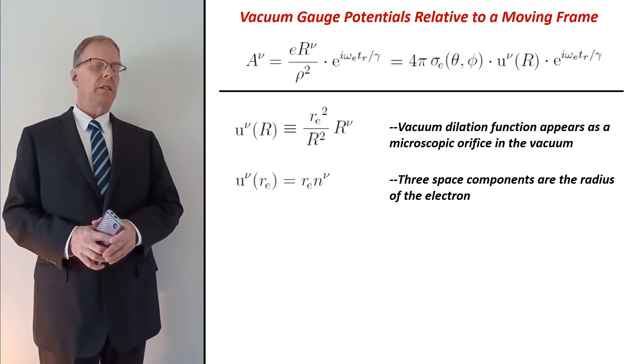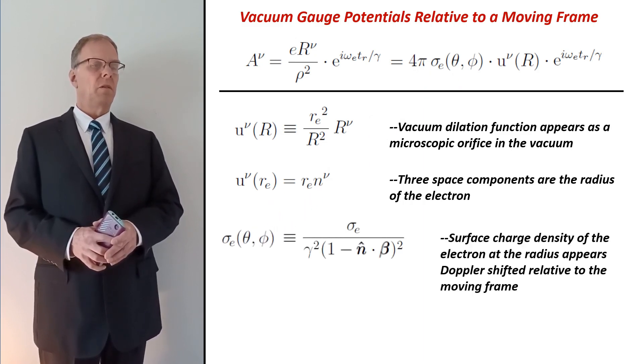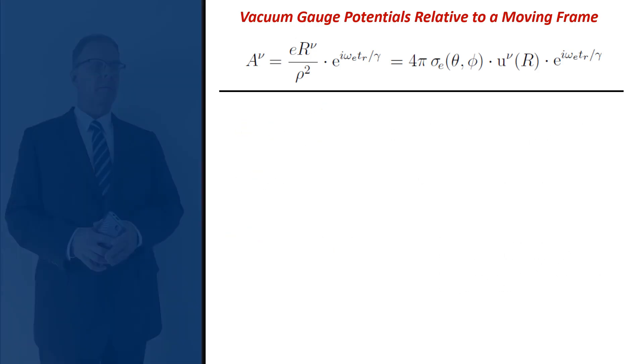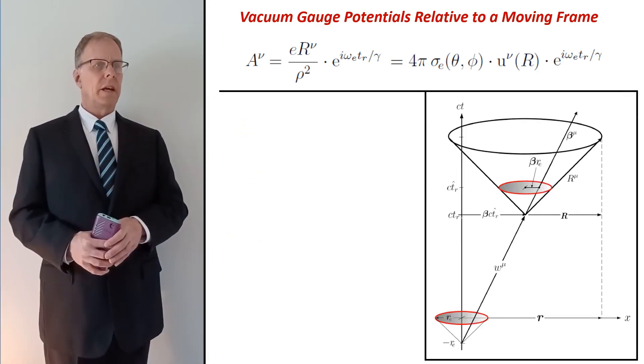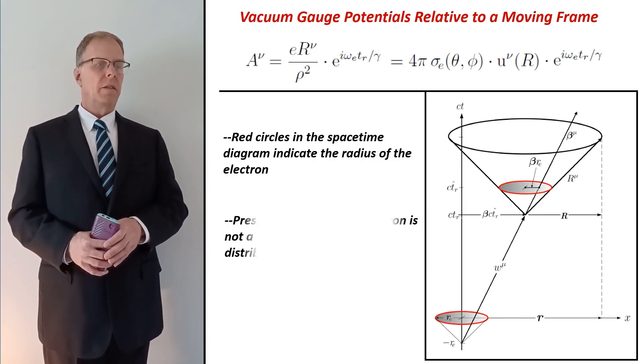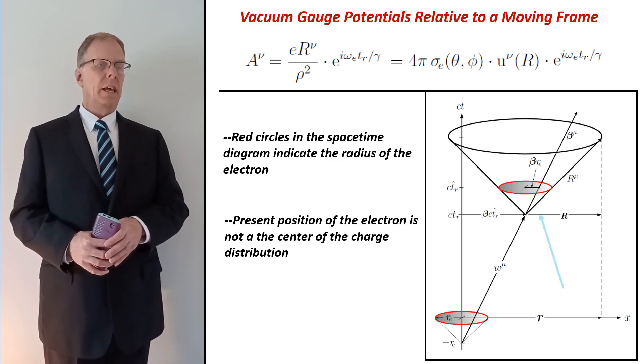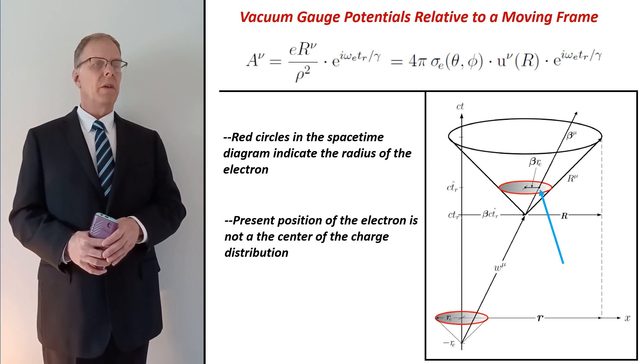At this radius, the vacuum gauge potentials show that the charge density becomes doppler shifted, appearing as a function of the polar and azimuthal angles. In the space-time diagram shown here, the red circles are drawn to indicate the radius of the moving particle. We note that the present position of the electron is not at the center of the charge distribution, and that's shown by the floating blue arrow.